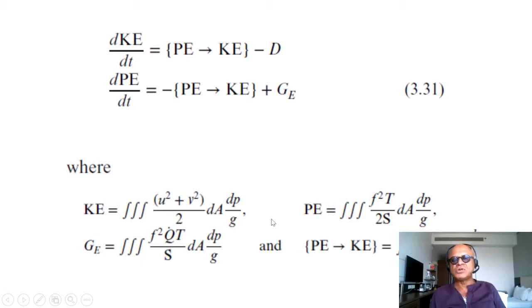Potential energy is related to f²T divided by static stability, because that is how the mass profile is moved up or down. Generation of PE is related to heating, and the PE to KE loss is related to WT, the vertical motions.